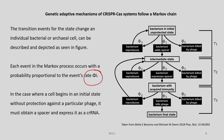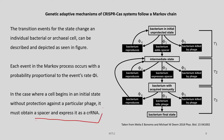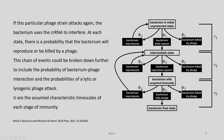Each event in this Markov process occurs with a probability proportional to the event's rate, called phi i. So we have phi 1, phi 2, phi 3, phi 4, and phi 5 — each state depicting one kind of event. Phi 4 is the event where the bacterium reproduces and survives, and phi 3 is the stage where the bacterium kills the phage — altogether the opposite. In the case where a cell begins in an initial state without protection against a particular phage, it must obtain a spacer and express it as a crRNA, which we call a CRISPR spacer RNA.